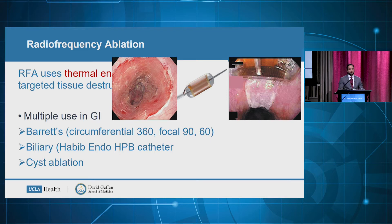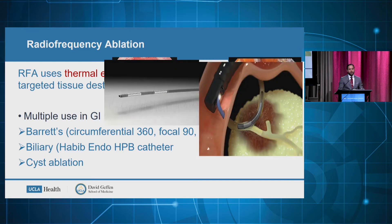For Barrett's esophagus, we have a 360-degree ablation balloon in addition to focal catheters to ablate areas of dysplastic mucosa in the lower esophagus. Recently, endobiliary catheters have been developed. The Habib catheter is a single-use, 8-French catheter used during ERCP for ablation of malignant biliary strictures, providing 7 to 10 watts of energy. We have this available at UCLA for selected non-surgical patients with malignant biliary obstructions.